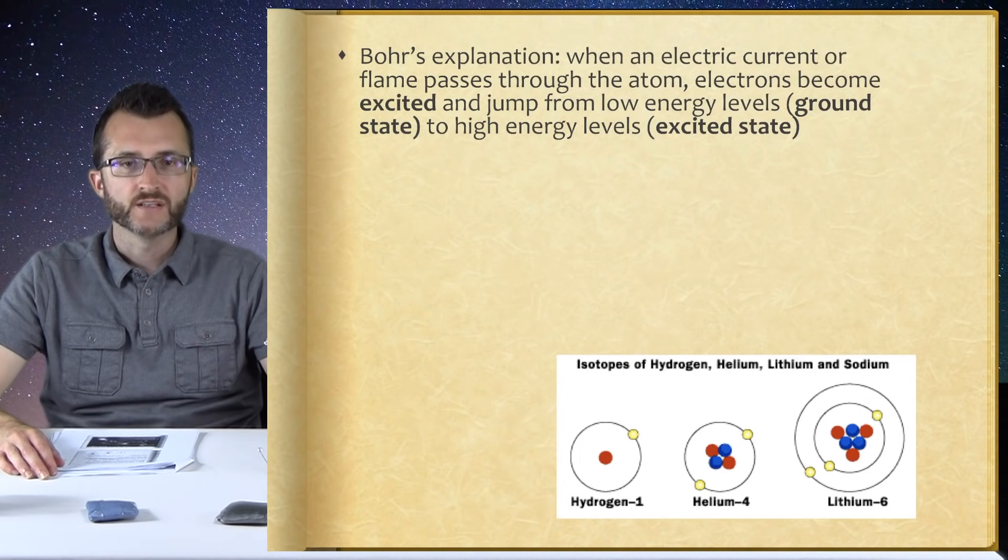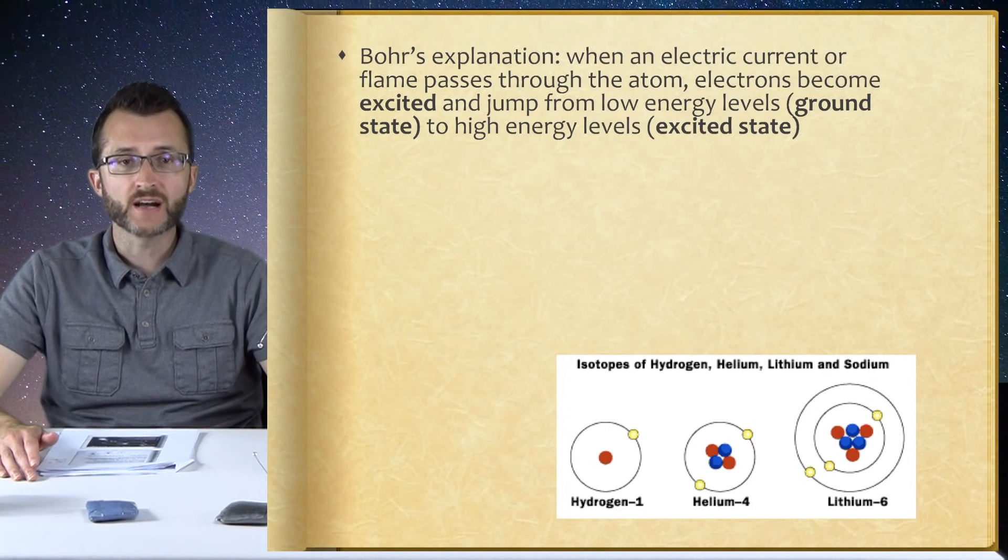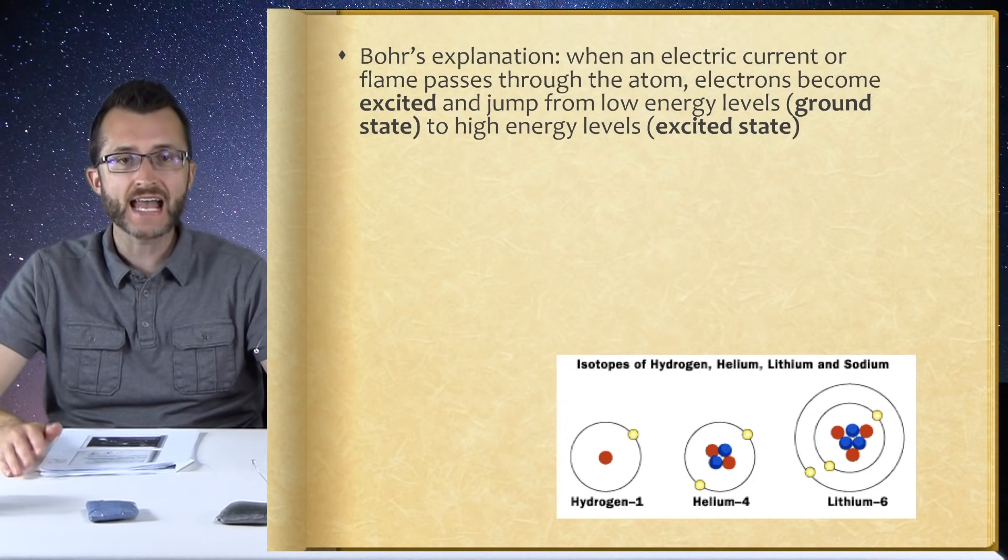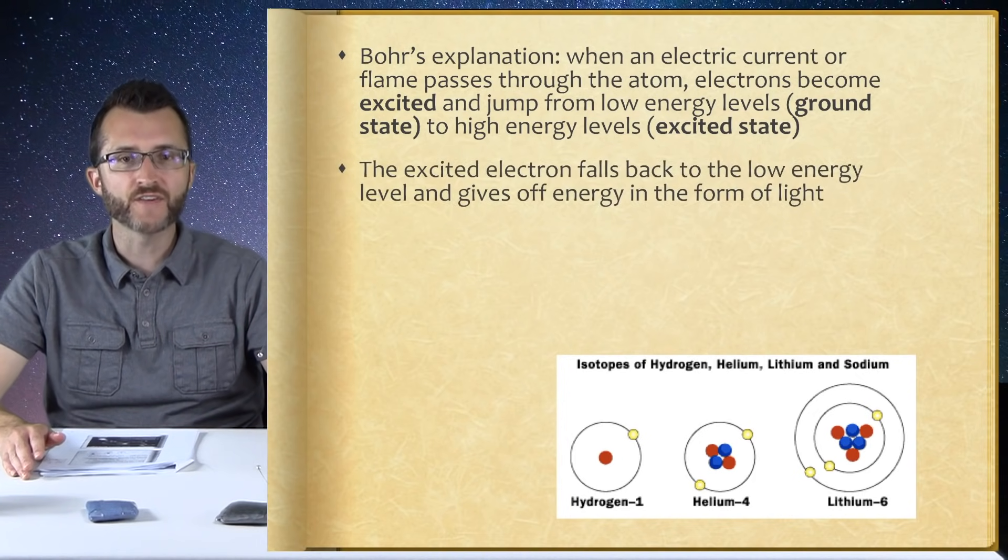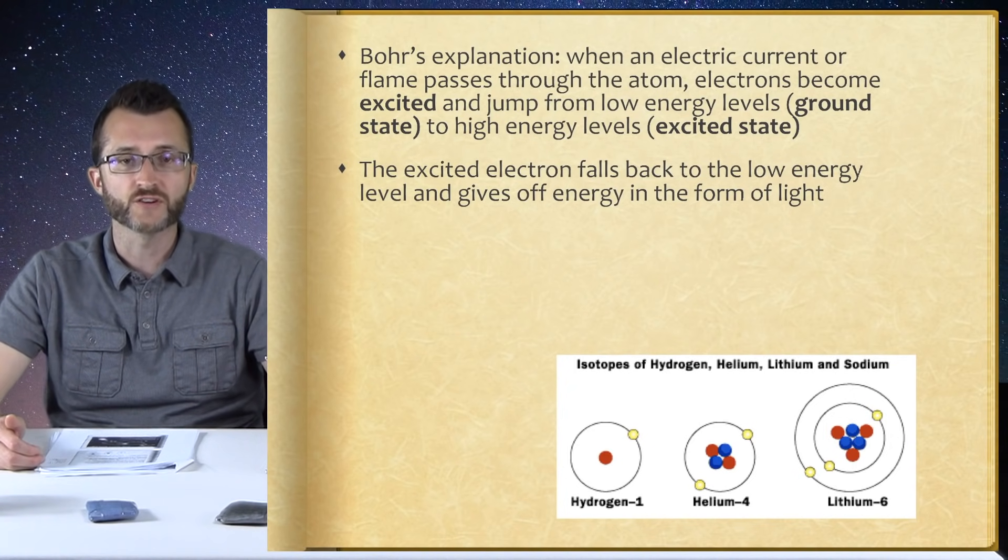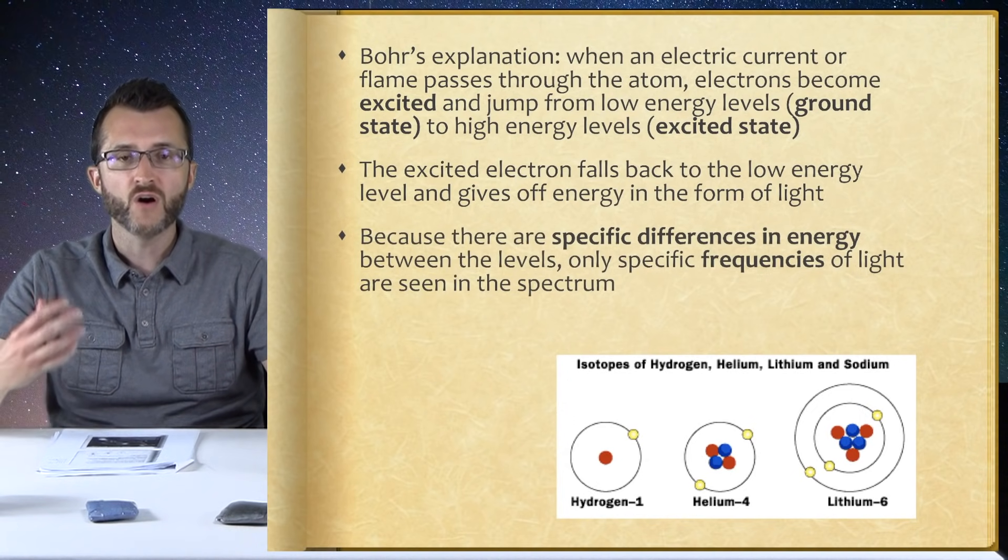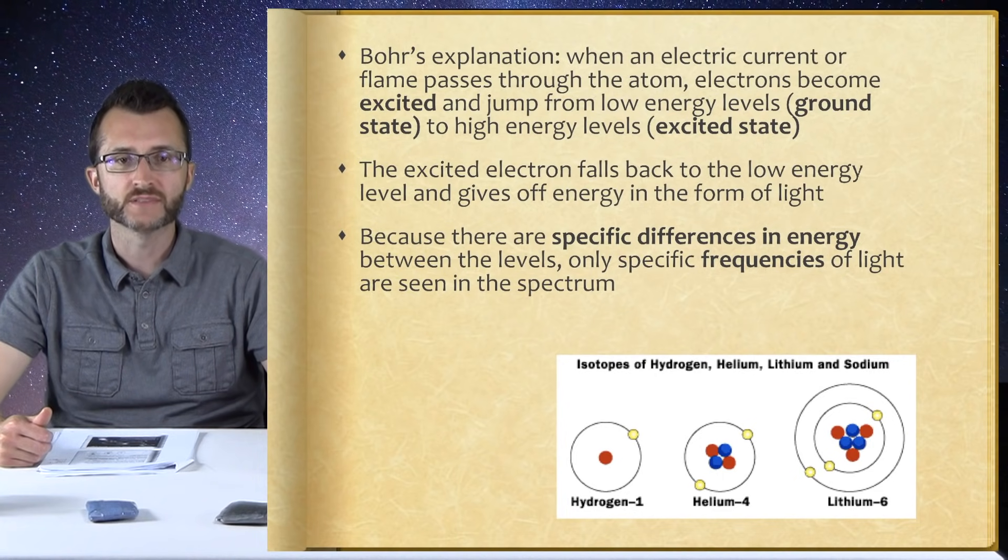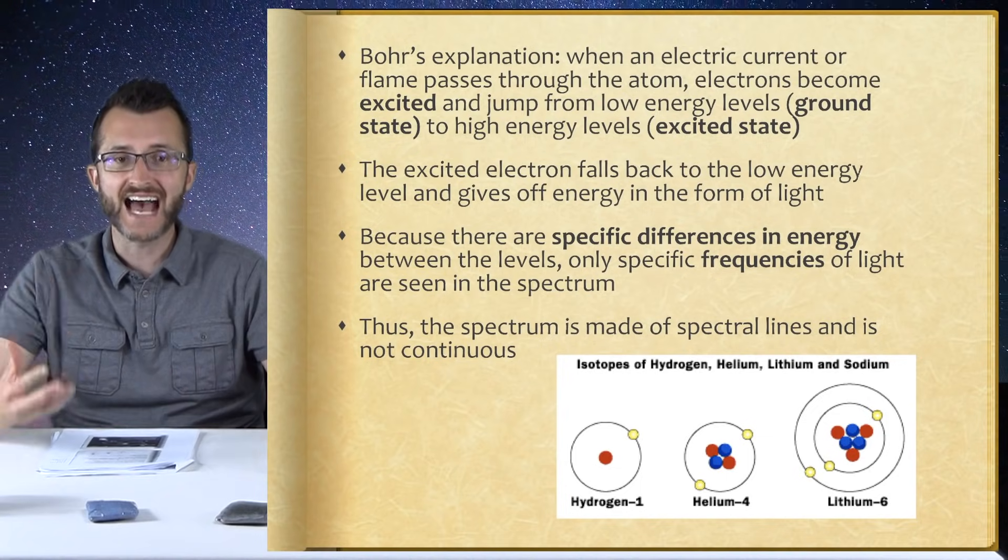Bohr's explanation: When an electric current or flame passes through the atom, electrons become excited and jump from low energy levels, called the ground state, to high energy levels, called the excited state. The excited electron falls back to the low energy level and gives off energy in the form of light. Because there are specific differences in energy between the levels, only specific frequencies of light are seen in the spectrum. Thus, the spectrum is made of spectral lines and is not continuous.